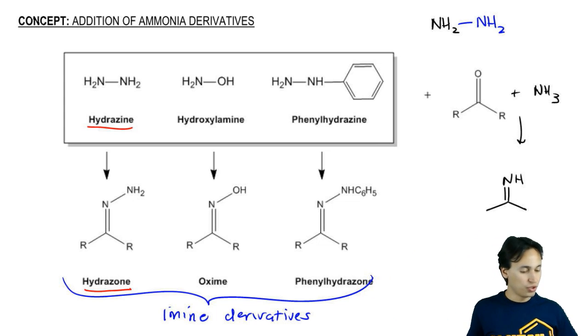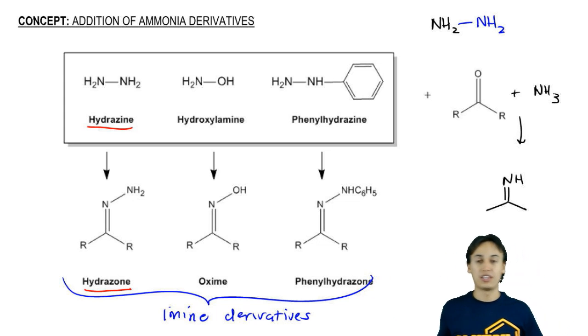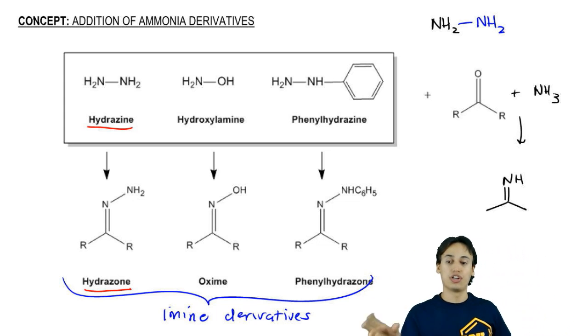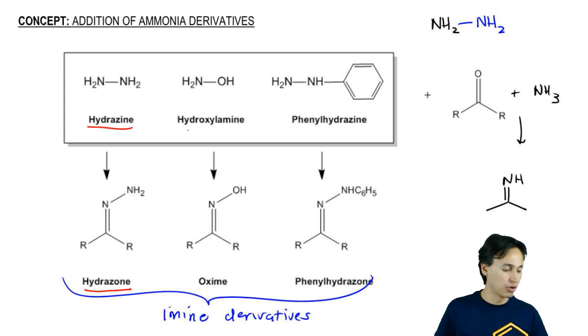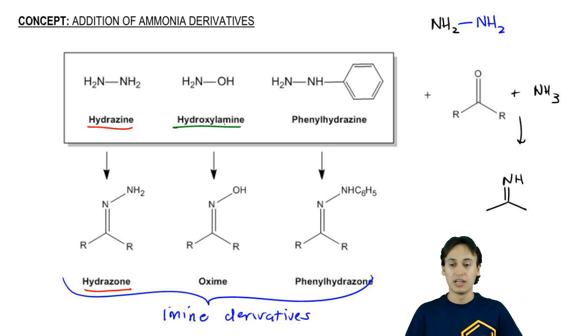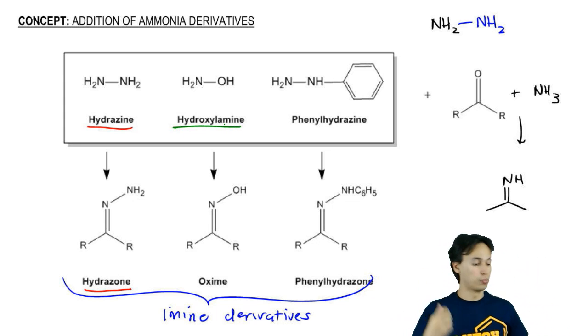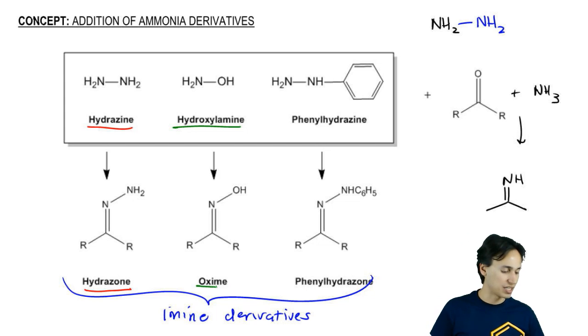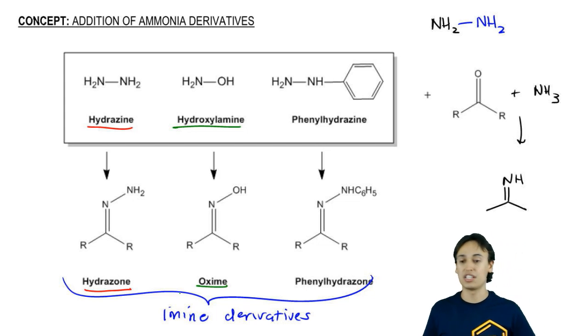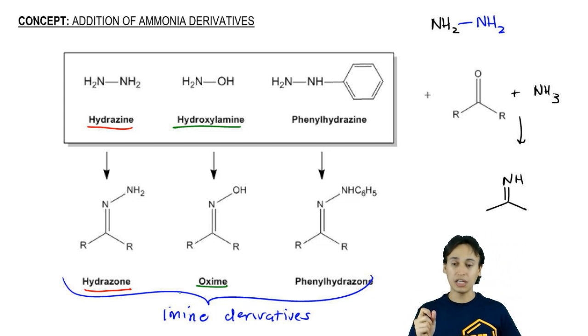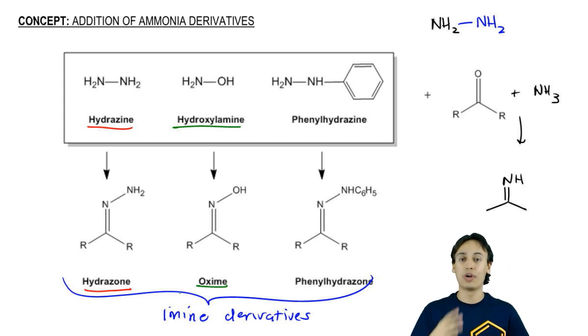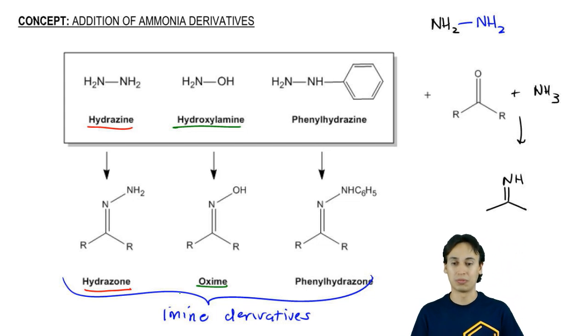What if you reacted with an NH2 and an OH? That's called a hydroxylamine, and that's going to give you a functional group called an oxime. An oxime would be an amine with an OH coming off the top.